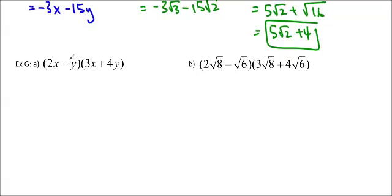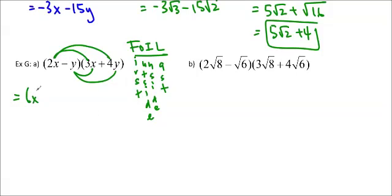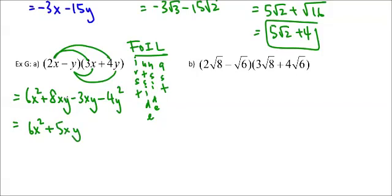These work the same way using FOIL — multiply the first two together, then the outside two, the inside two, and the last two: First, Outside, Inside, Last. So we take the first term and multiply by both terms in the second bracket, then the second term and multiply by both. For example: 2x times 3x is 6x squared; 2x times 4y is 8xy; negative y times 3x is minus 3xy; negative y times 4y is minus 4y squared. Collecting like terms: 8xy minus 3xy gives 5xy, so the answer is 6x squared plus 5xy minus 4y squared.